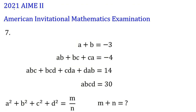Problem number seven of 2021 AMC 2. We have four equations and we want to find a² + b² + c² + d², which equals m/n in lowest terms — find m + n. The equations are: a + b = -3; ab + bc + ca = -4; abc + bcd + cda + dab = 14; and abcd = 30.